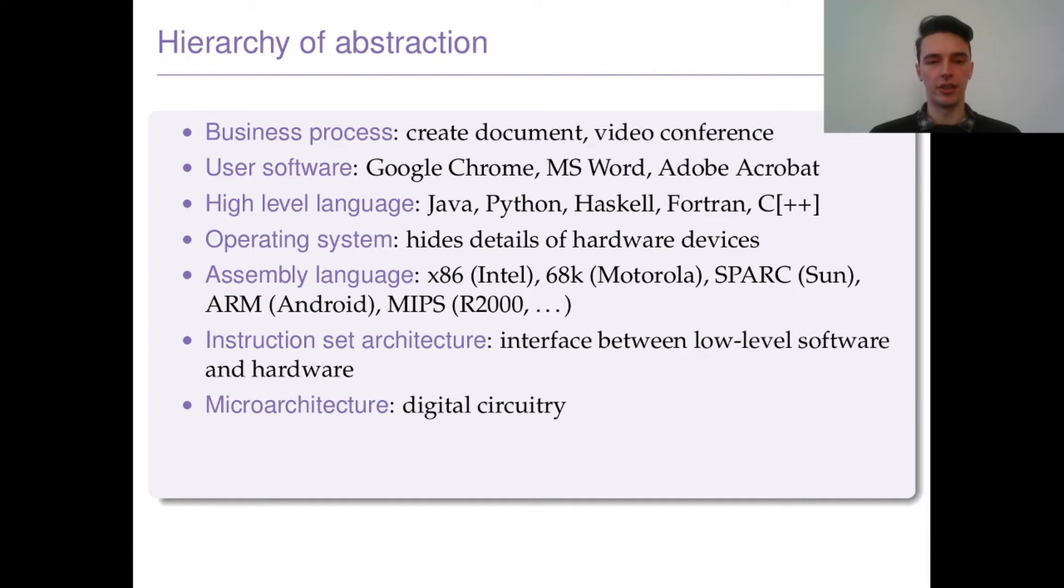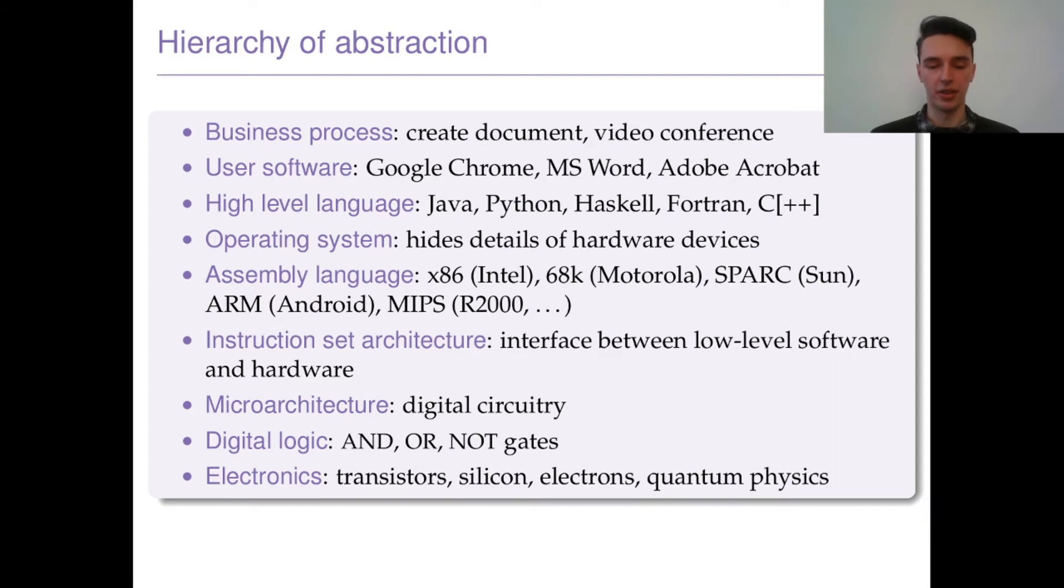Next we have the microarchitecture, which you should all be familiar with - this is the digital circuitry that makes all of this go. And then from the components of that, the digital logic: ANDs, ORs, NOTs, XORs, everything that we can build up from to make powerful circuits. That of course is implemented by the electronics layer - the actual silicon and plastic that makes everything go.